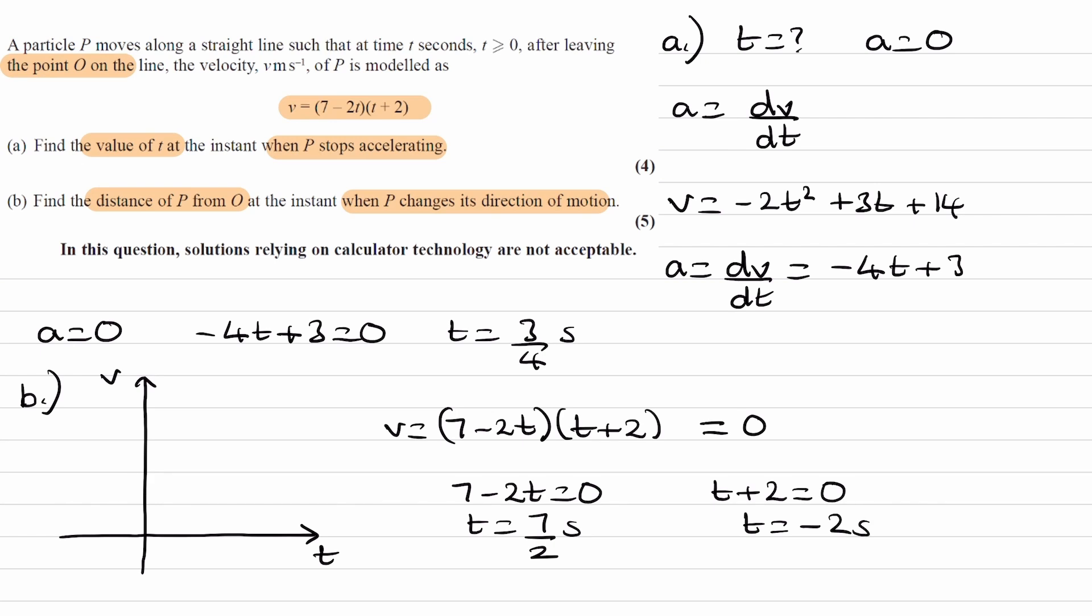Those two points are here and here, and then we want to think about does our graph look like this, or does our graph look like this? Well, if we look at the expanded form of this equation up here, we can see that the t squared term is negative, and therefore it must have this kind of shape. That looks something like that.